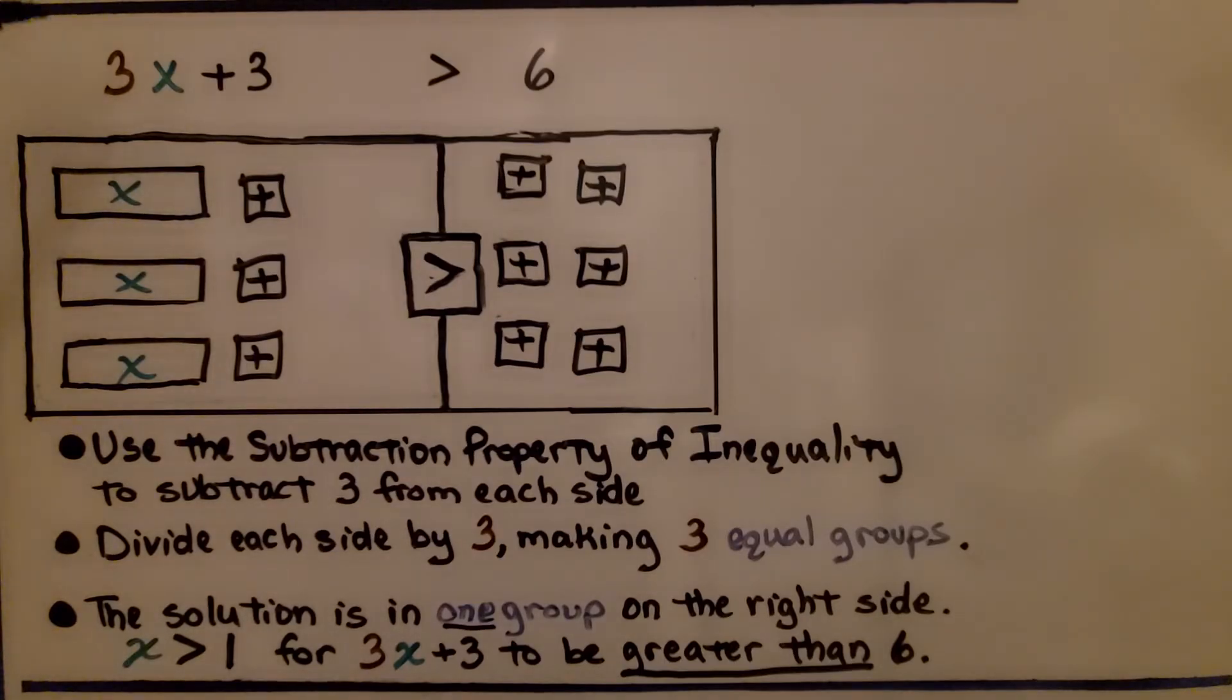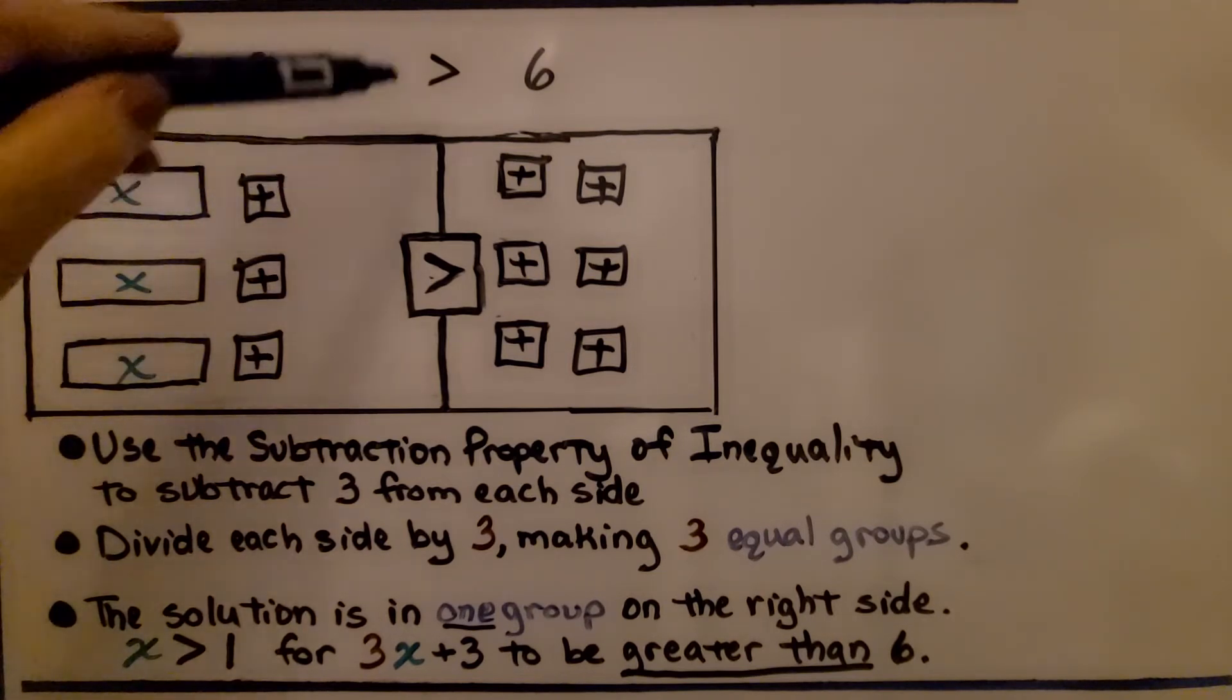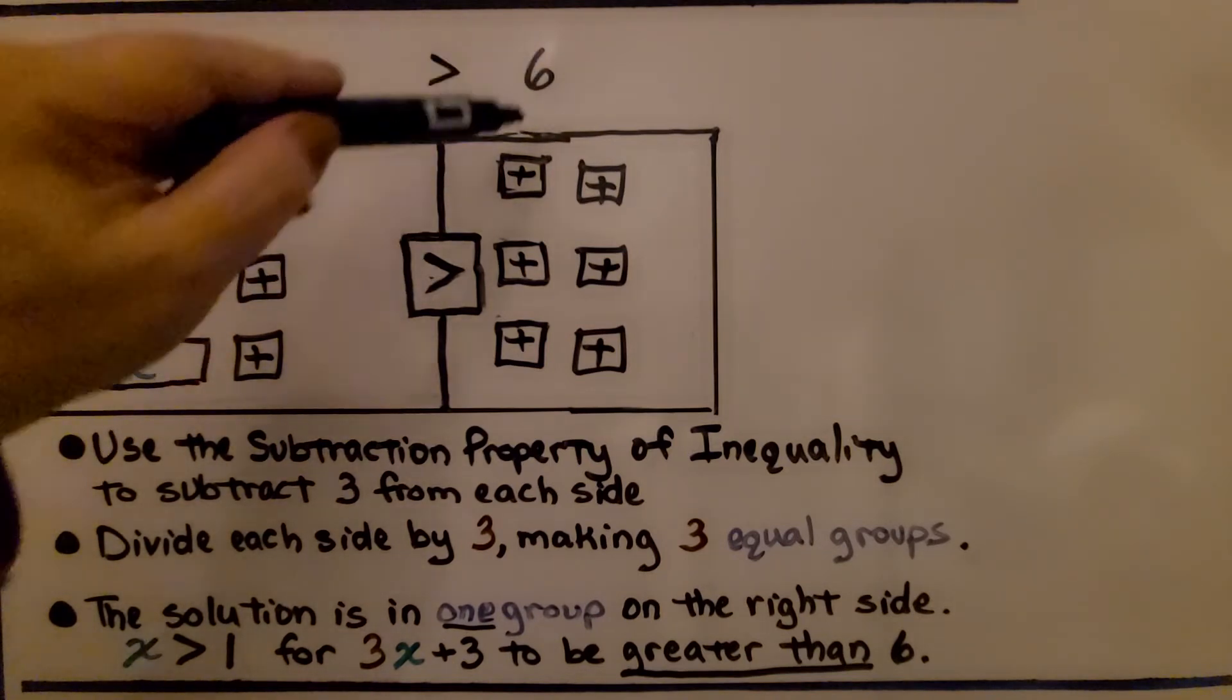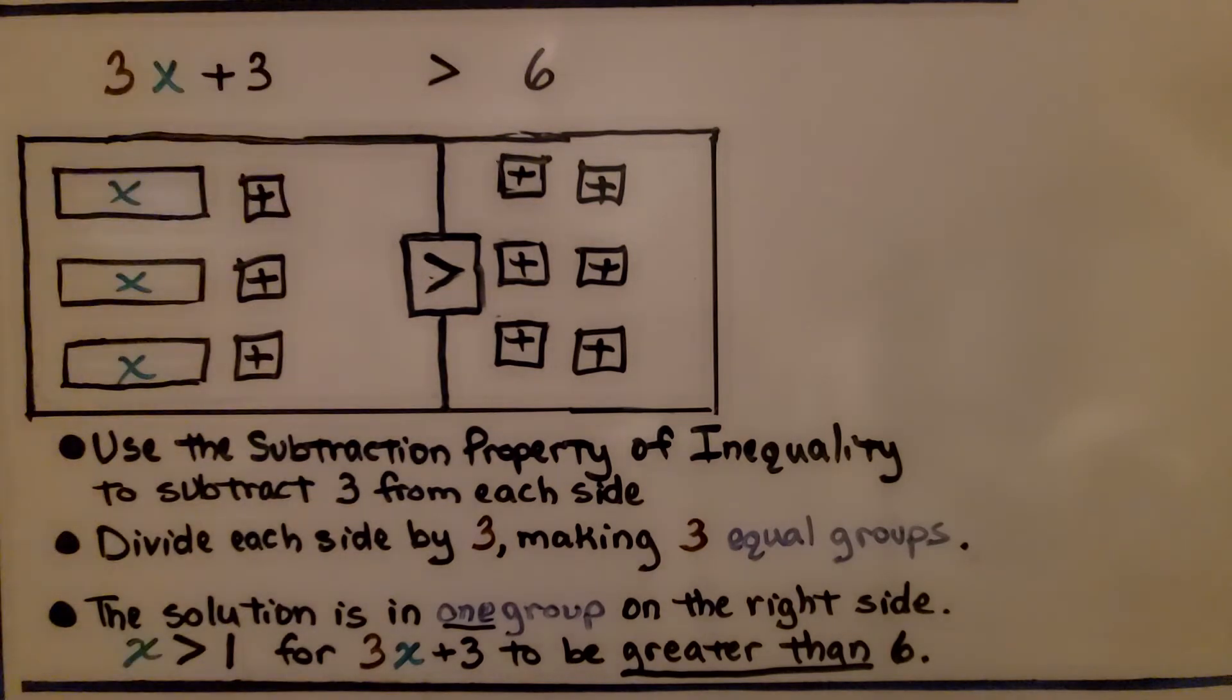Here we have the inequality three x plus three is greater than six. We have three x tiles. We have three plus tiles for the constant positive three. We have our is greater than symbol in the center here, and we have six plus tiles for our positive six. We use the subtraction property of inequality to subtract three from each side.